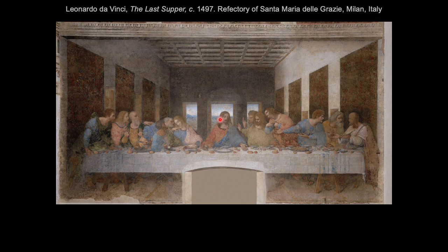Leonardo da Vinci desired to mimic the freedom and flexibility of oil paint on a wooden panel, and so he experimented with mixing oil and tempera paints and applying them to a thin layer of dry plaster. The results were quite disastrous, and the work began to deteriorate very quickly, with pieces flaking off even during da Vinci's lifetime. Later, the monks cut a hole into the wall to create a doorway and removed a large chunk of the already quite badly damaged painting.